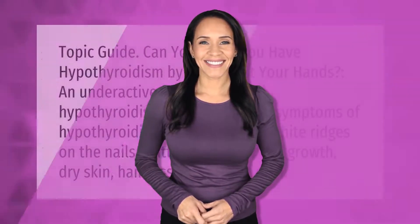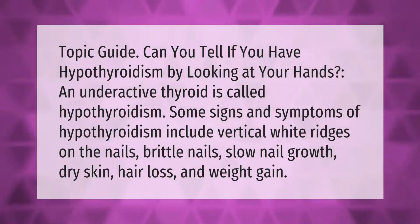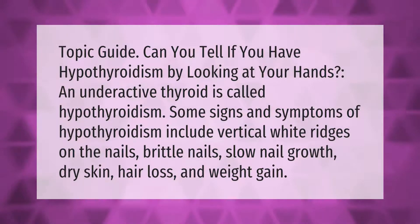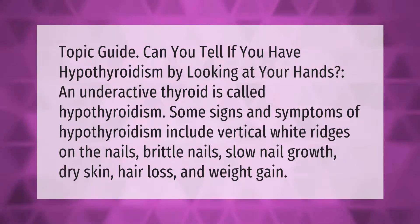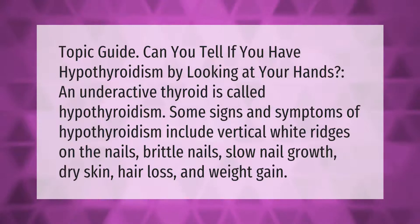Topic guide: Can you tell if you have hypothyroidism by looking at your hands? An underactive thyroid is called hypothyroidism. Some signs and symptoms of hypothyroidism include vertical white ridges on the nails, brittle nails, slow nail growth, dry skin, hair loss, and weight gain.